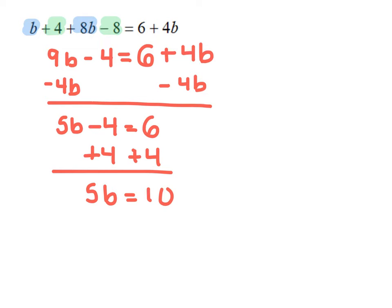Now the last thing I have to do is finish isolating b. Since b is multiplied by 5, the inverse is to divide both sides by 5, giving me b equals 2.